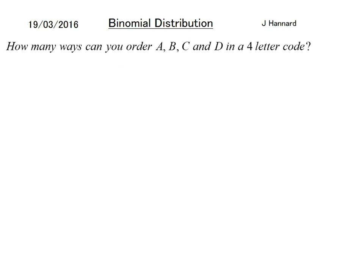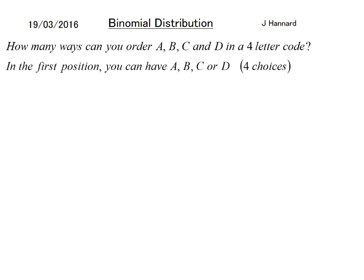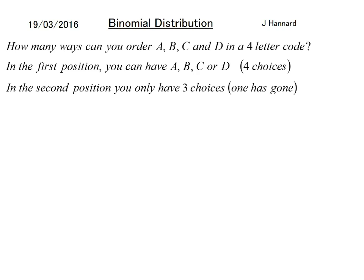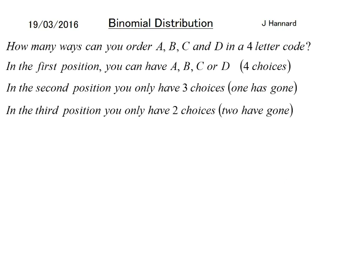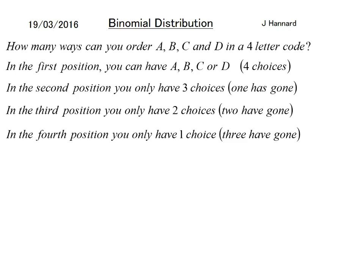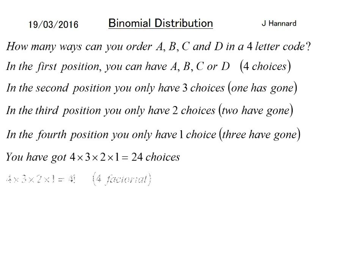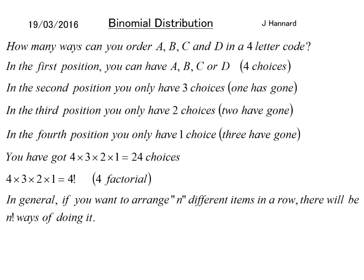So, how many ways can you order A, B, C and D in a four-letter code? In the first position you've got four choices: A, B, C or D. In the second position you'll only have three choices left because one's gone. In the third position you'll only have two choices left, and in the fourth position just one. So you've got four times three times two times one, which is twenty-four — four factorial. Because AND in probability means times, and you end up with twenty-four choices overall.